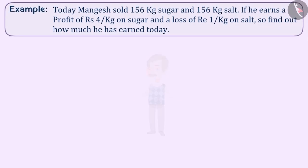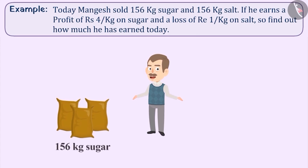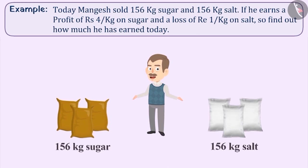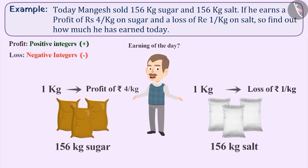Next example: today Mangesh sold 156 kg of sugar and 156 kg of salt. He earns a profit of 4 rupees per kg on sugar and a loss of 1 rupee per kg on salt. Find out how much he has earned today. Solve this by denoting profit as a positive integer and loss as a negative integer.